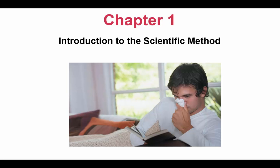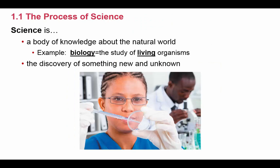In chapter 1 of biology we're going to look at the scientific method. This is usually one of the first topics discussed in any science class, and chapter 1 gives an overview of the process of science. To start out, let's discuss science in general. By definition, science is a body of knowledge — specifically, knowledge about the natural world.